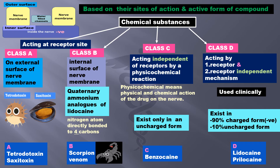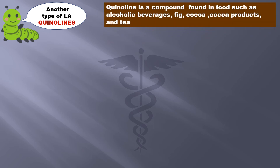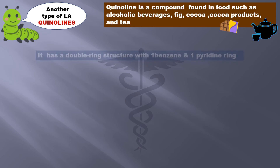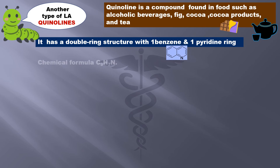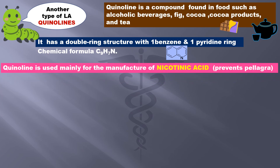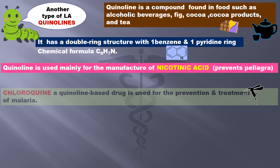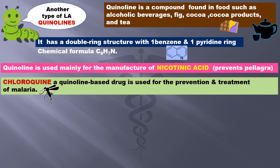Before finishing, let us learn a little about another type of LA — quinolines. Quinoline is a compound found in foods such as alcoholic beverages, fig, cocoa, cocoa products, tea, etc. It has a double ring structure with one benzene and one pyridine ring. Its chemical formula is C9H7N. Quinoline is used mainly for the manufacture of nicotinic acid, which prevents pellagra. Another familiar drug is chloroquine, which is also a quinoline-based drug used for prevention and treatment of malaria.